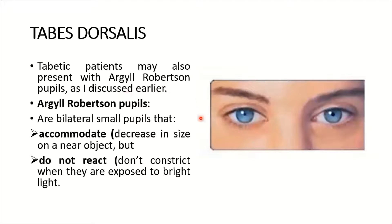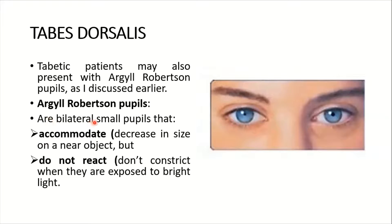Argyll Robertson pupils may be seen here. Diabetic patients may also present with Argyll Robertson pupils. These are bilateral small pupils that accommodate — meaning they decrease in size when focusing on a near object — but they do not react or constrict when exposed to bright light. In summary: they accommodate but do not react.